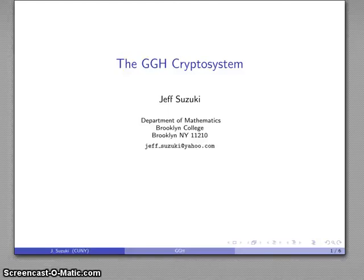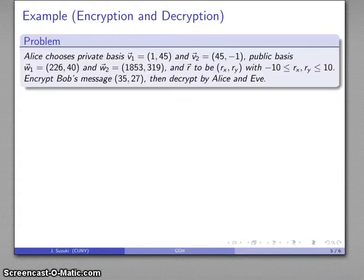So let's continue our example of the use of the GGH cryptosystem. We have a cryptographic system where Alice chooses two, in this case perfectly, orthogonal vectors V1 and V2 as the private basis.